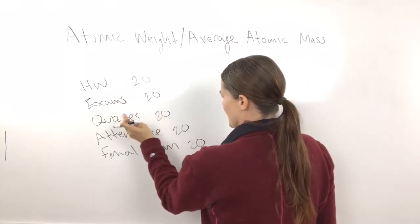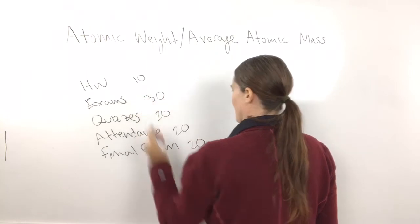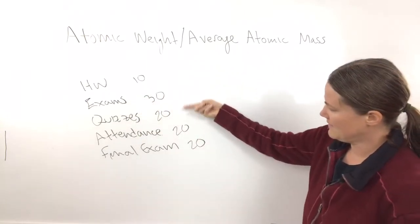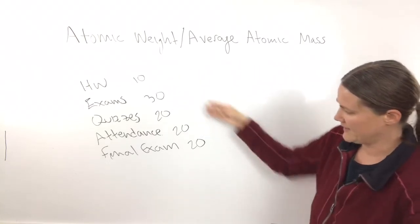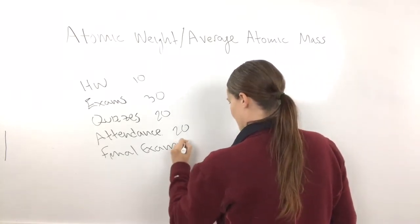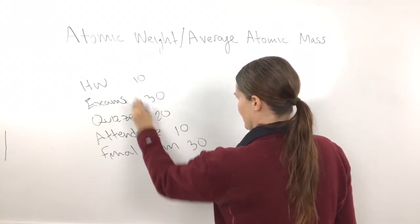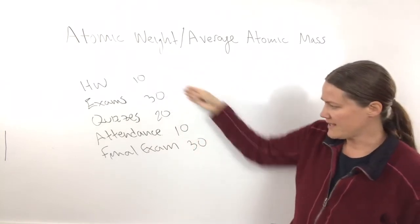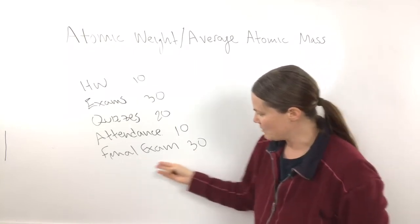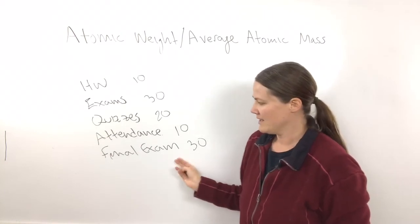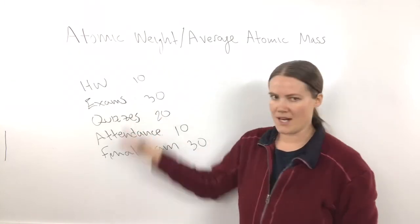Now let's say the homework is worth ten percent, exams are worth thirty percent, quizzes twenty percent, the final is worth thirty percent, and attendance is worth ten percent. The percents still add up to a hundred, but now your final exam is worth thirty percent of your grade and attendance is worth ten percent. This is an example of a weighted average.